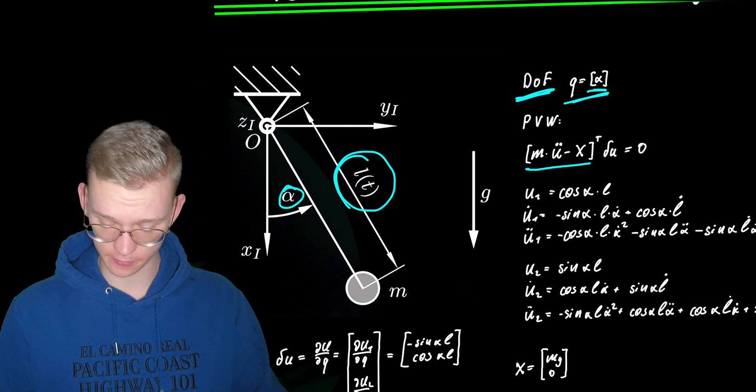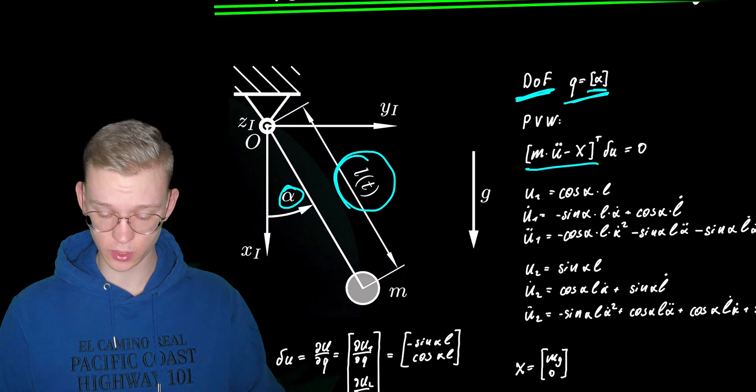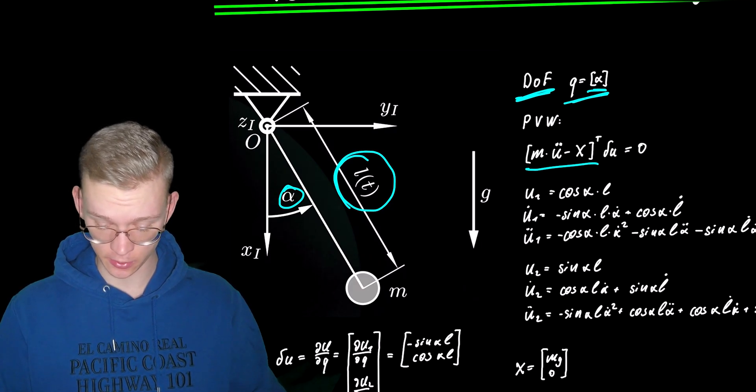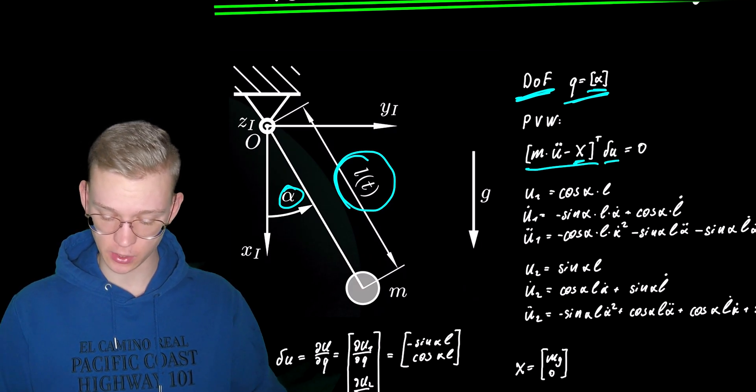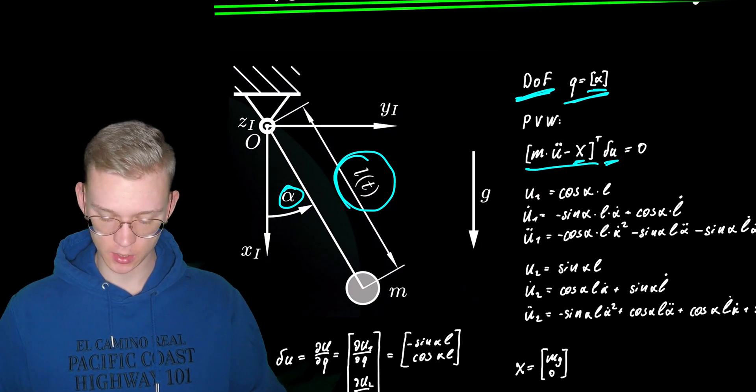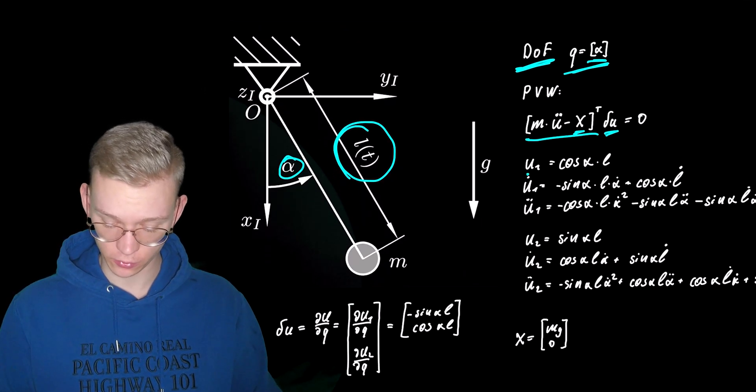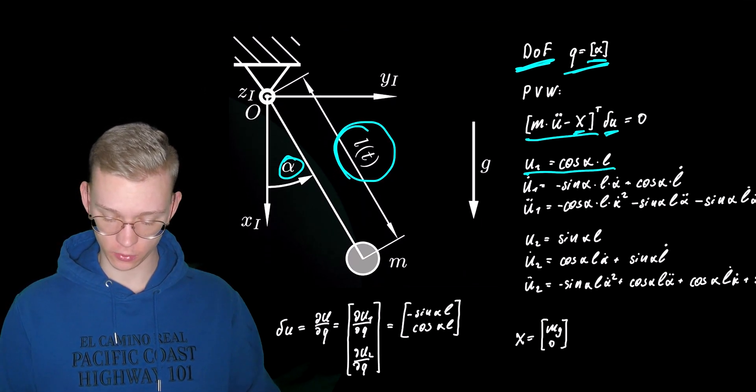The principle of virtual work is very easy. We have m times u double dot minus the forces that are acting on our system times our virtual displacements. So first of all we have to get the position of our point.